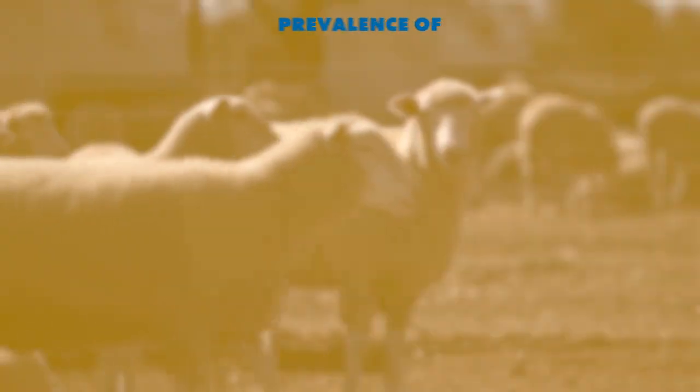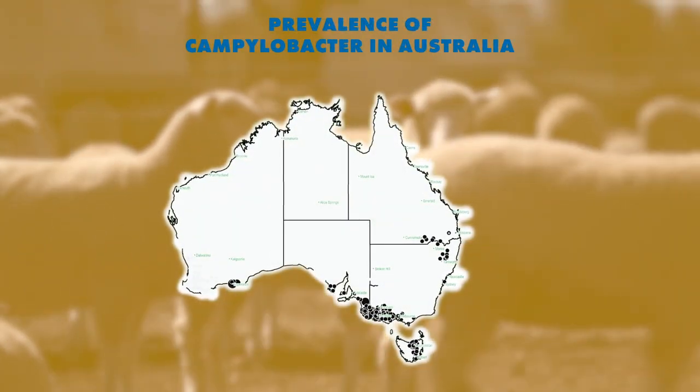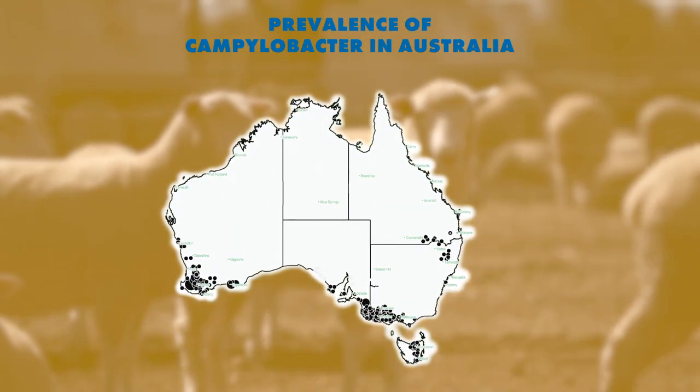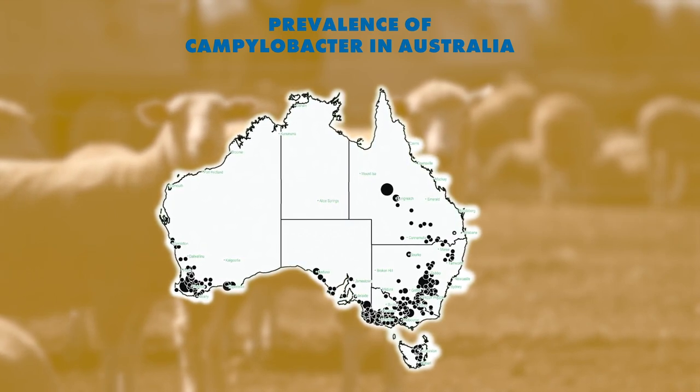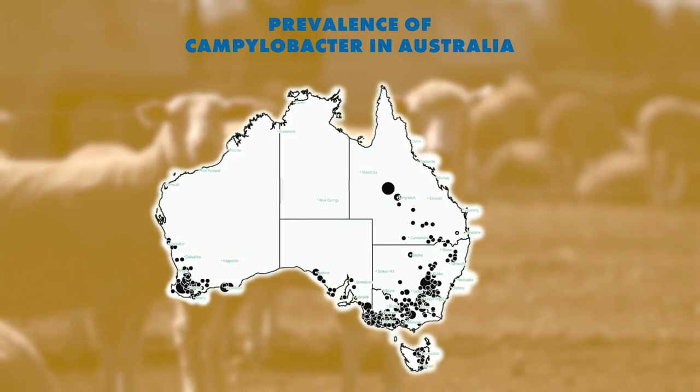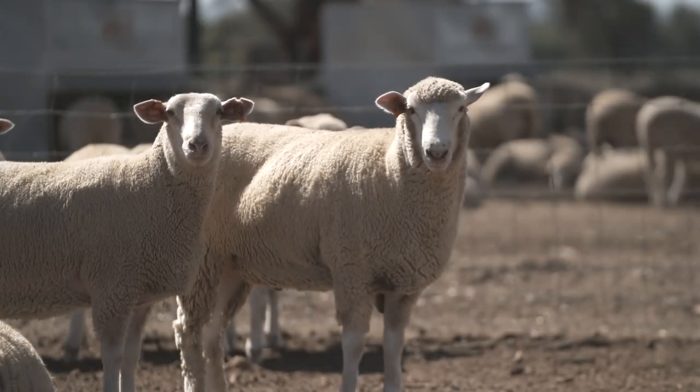Campylobacter is the most common cause of infectious abortions in sheep. We now know that the bacteria is widespread across Australia, and when maiden ewes are protected against Campylobacter, producers can increase the LMA percentage by an average of 9% if Campylobacter is having an effect on the farm. The impact varies greatly from year to year and property to property, and is often dependent on previous exposure to the disease.